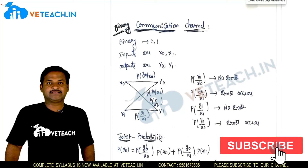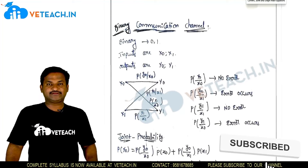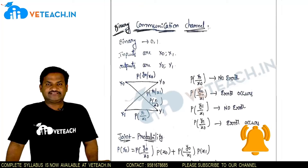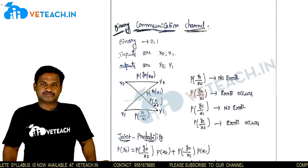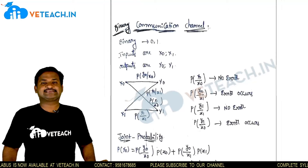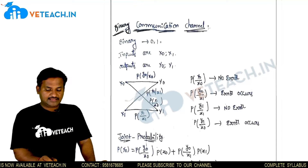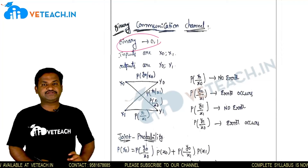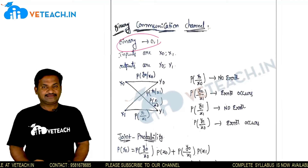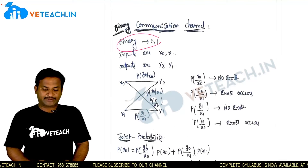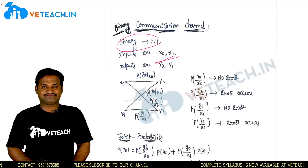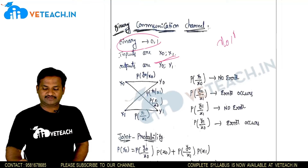Welcome to VTG. Today we are going to discuss the topic of binary communication channel. What is the difference between binary communication channel, binary memoryless discrete channel? In a binary channel, we transmit binary information — zero and one — so we can relate the channel in terms of binary bits. The inputs are x0, x1.